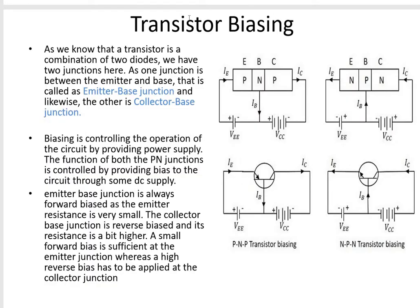What is the biasing of a transistor? Biasing is an important factor that decides the function of the transistor — transistor operation is controlled by proper biasing. Biasing is the way of applying potential to the transistor; the way of connecting batteries to a transistor is known as biasing. A transistor consists of two PN junctions — one in the PNP transistor at the emitter-base and another at the base-collector.